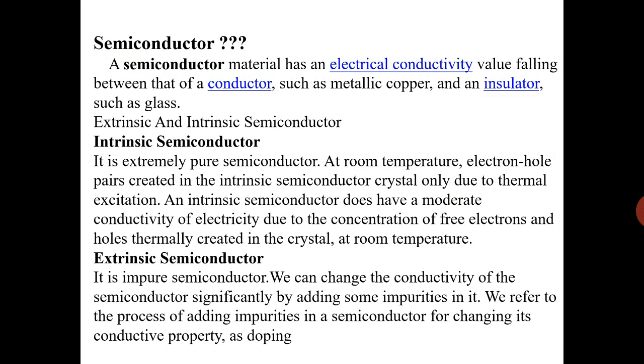Semiconductors are divided into two parts. First is intrinsic semiconductor and second one is extrinsic semiconductor. In an intrinsic semiconductor, it is extremely pure semiconductor. At room temperature, electron hole pairs created in the intrinsic semiconductor crystal only due to thermal excitation. An intrinsic semiconductor does have a moderate conductivity of electricity due to concentration of free electron and holes thermally created in the crystal at a room temperature.